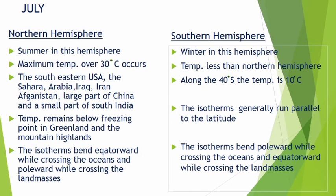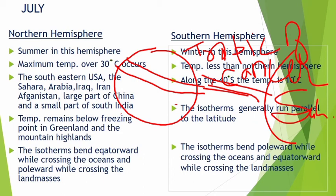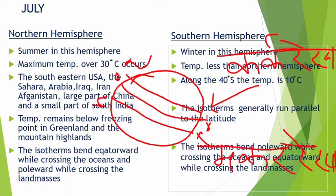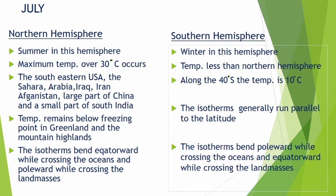Now we will talk about the month of July. The sun shines almost vertically above the Tropic of Cancer in the northern hemisphere. When we discussed January, it was the Tropic of Capricorn in the southern hemisphere. In July, the sun is at 23.5 degrees north — the Tropic of Cancer. This means it is summer in the northern hemisphere.